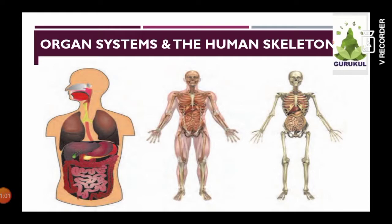A group of organs performing similar functions together in a body is called an organ system. In the first system, the digestive system, there are various organs like the mouth, pharynx, stomach, and intestines. All these together perform the function of digestion — the food we eat is converted into energy and waste materials are removed from our body.